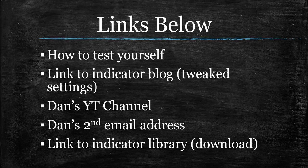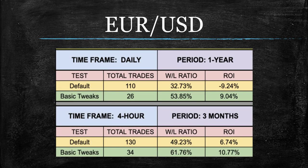Moving in to the EURUSD for the geometric mean moving average — pretty strong. I like these numbers, I like the win-loss ratio, I like the number of trades on the daily. I like everything about it, and you're getting even more on the 4-hour. Really, really good place to start. Let's see if this continues.